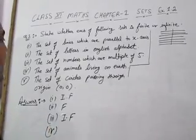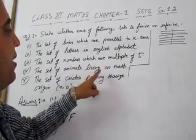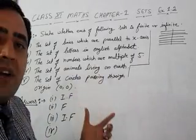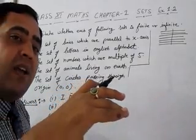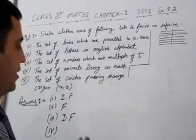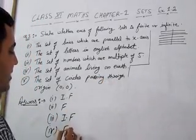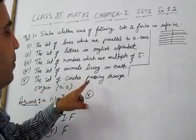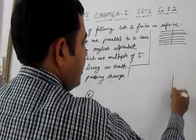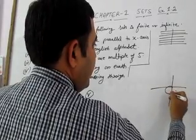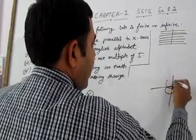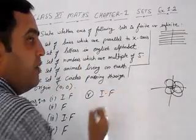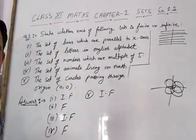The fourth part is the set of animals living on earth. On earth there are a lot of animals, but they are finite in number, therefore it is a finite set. The fifth part is the set of circles passing through the origin (0, 0). Through the origin, an infinite number of circles can pass, therefore it is an example of an infinite set.